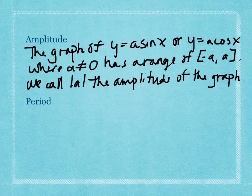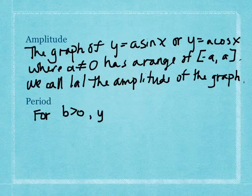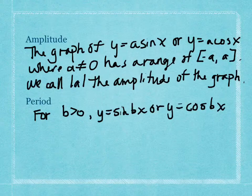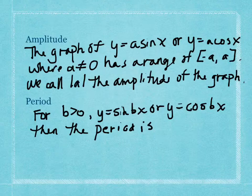The period of the graph can also change. For y = sin(bx) or y = cos(bx) with b > 0, the standard period of 2π is changed. The new period is found by taking 2π and dividing by the b value: period = 2π/b.